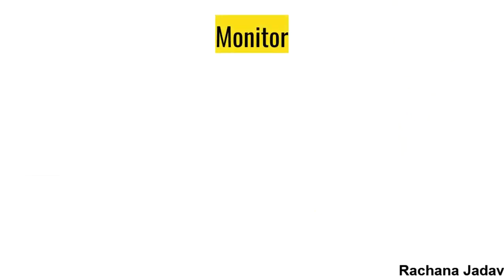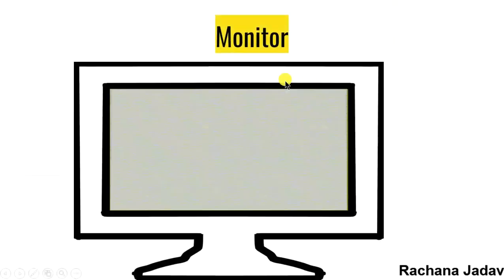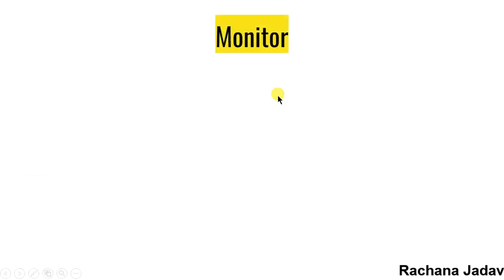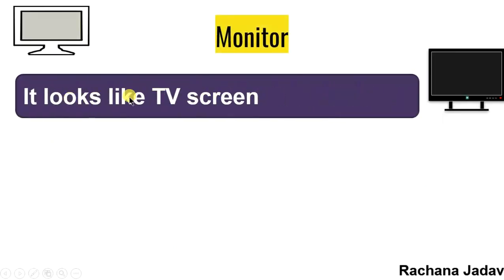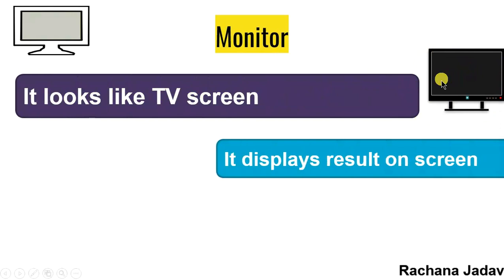Let's start in detail. So first of all, monitor. Monitor kaisa dikhta hai? You must have seen your TV — that is exactly how it appears. It looks like a TV screen. Aap ke TV ko aap dekhte ho, vaisa hi monitor hota hai.